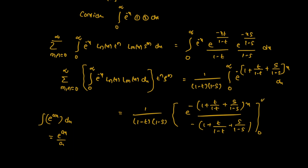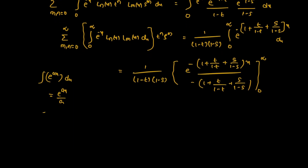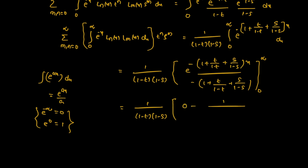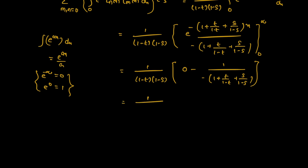With the limit from 0 to infinity: e^(-∞) = 0 and e^0 = 1. So the result is 1/(1-t)(1-s) · [0 - (-1/(1 + t/(1-t) + s/(1-s)))], which simplifies to 1/((1-t)(1-s)) · 1/(1 + t/(1-t) + s/(1-s)).